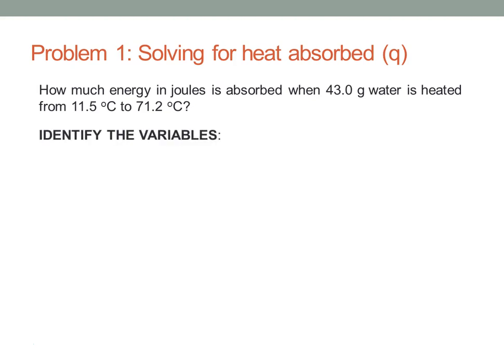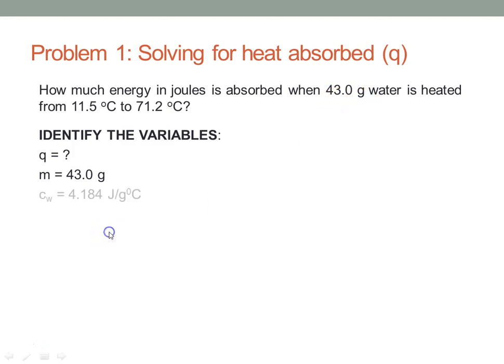The first thing you always want to do is identify the variables. In this case, Q is going to be our question mark because we're being asked how much energy in joules. M, in this case, is 43.0 grams. Whenever you see grams, you know that means mass.